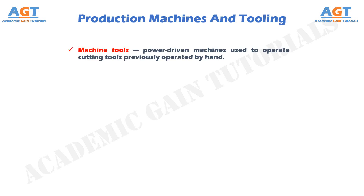These were called machine tools, which are power-driven machines used to operate cutting tools previously operated by hand. Modern machine tools are described by the same basic definition, except that the power is electrical rather than water or steam, and the level of precision and automation is much greater today.